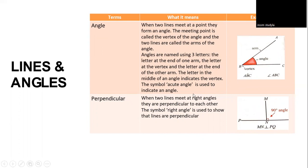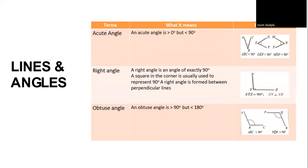When two lines meet at right angles, they are perpendicular to each other. The right angle symbol is used to show that lines are perpendicular. An acute angle is greater than 0 degrees but less than 90 degrees. A right angle is exactly 90 degrees; a square in the corner is usually used to represent 90 degrees. A right angle is formed between perpendicular lines. For example, angle XYZ equals 90 degrees.